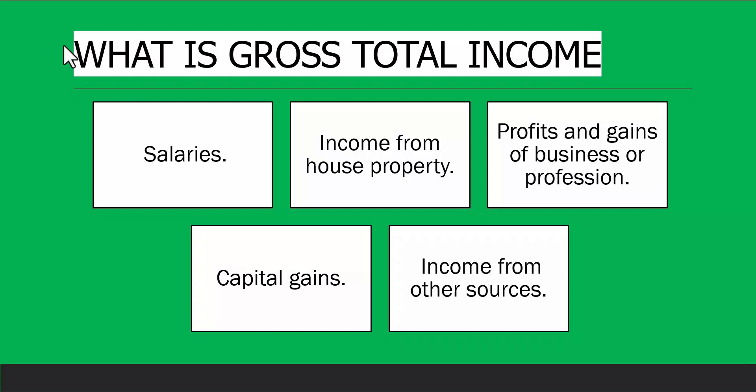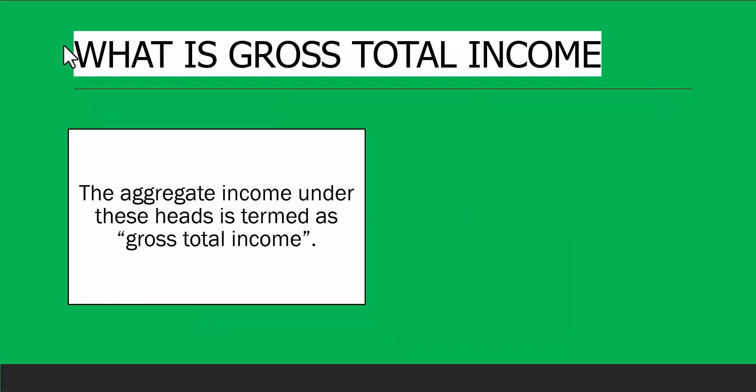In one particular year, I had income from all the sources — my father was doing business and I was a partner in that business, I was working in a company, I had a house property given on rent, I sold some property so I had capital gains, and I also had dividends. Very rarely will a person have income from all sources at the same time.